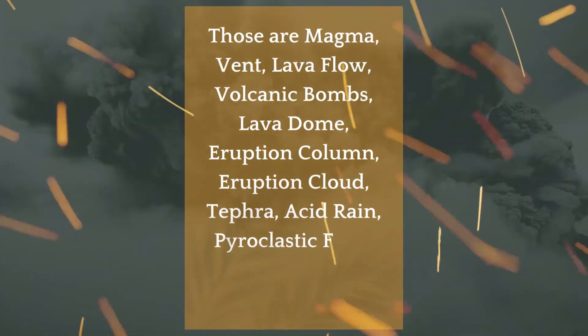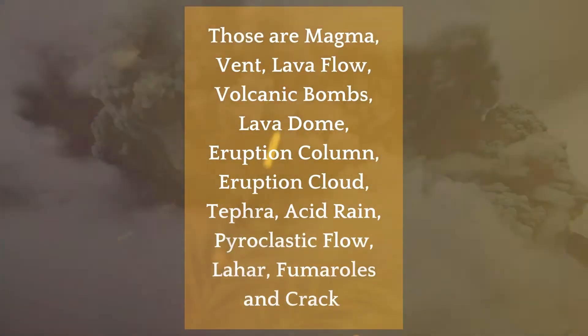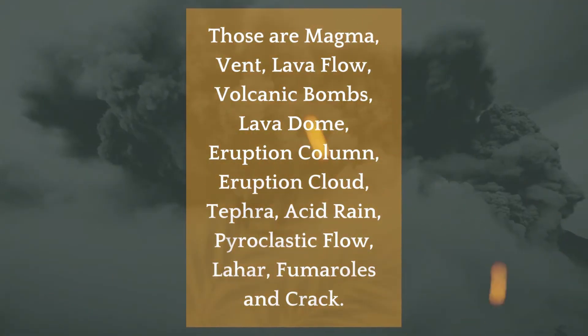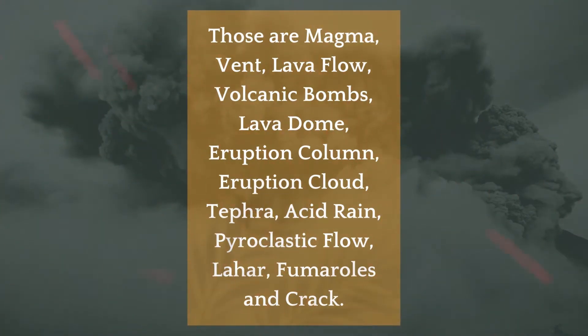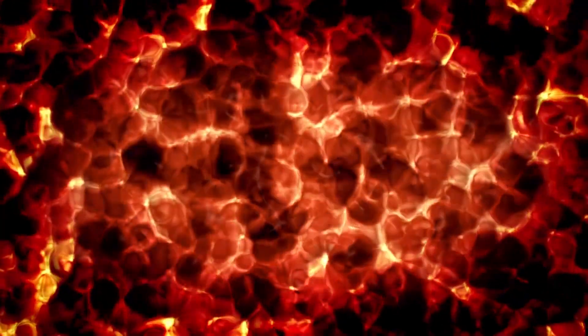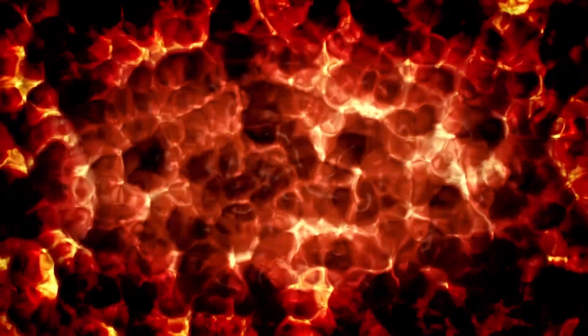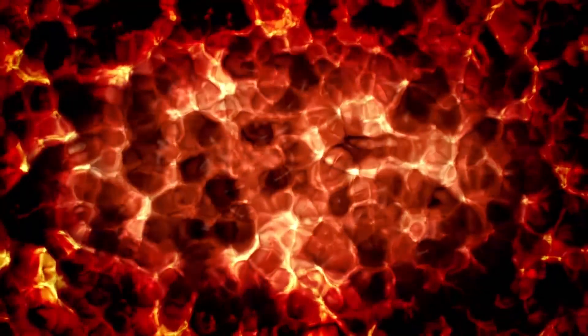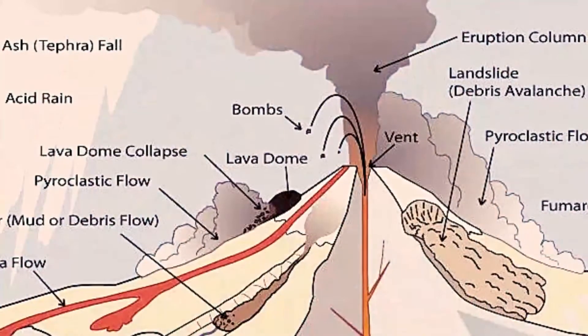The parts are: magma, vent, lava flow, volcanic bombs, lava dome, eruption column, eruption cloud, tephra, acid rain, pyroclastic flow, laha, fumaroles, and crack. Magma: when rocks become so hot they become a substance called magma. It collects in magma chambers on average one to ten kilometers below the surface.